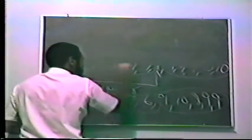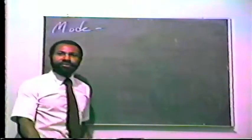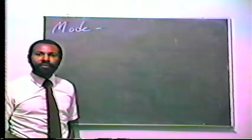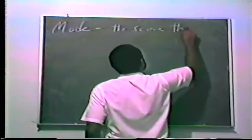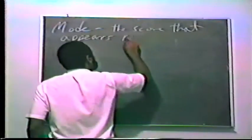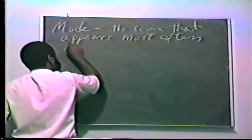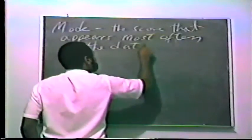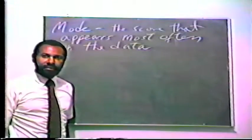Another measure of central tendency is what we call the mode. The mode is the score that appears most often in the data set.